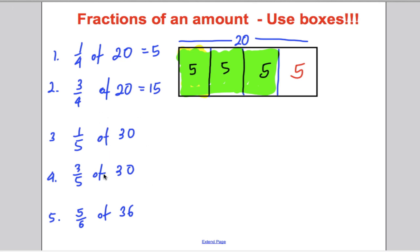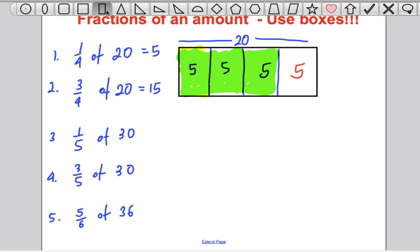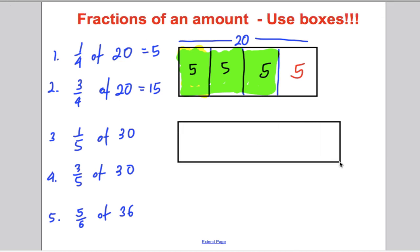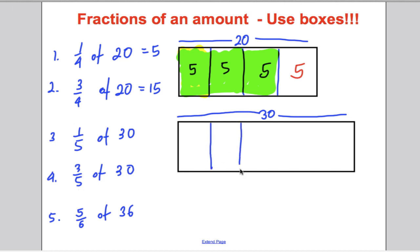Let's do question three and four. One fifth of 30. Let's draw a box to represent 30. This whole box here represents 30. And we want to work out one fifth and three fifths. So let's split them into fives. What number must go in each box? Well, you could guess or you could do 30 divided by five. But if you guessed that maybe five, five, 10, 15, 20, 25, no good. Six, 12, 18, 24, 30. Yes.